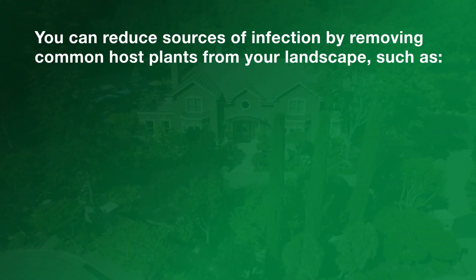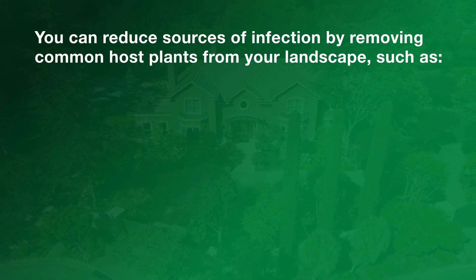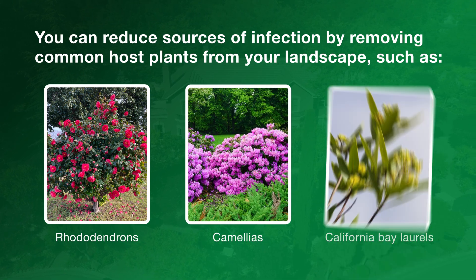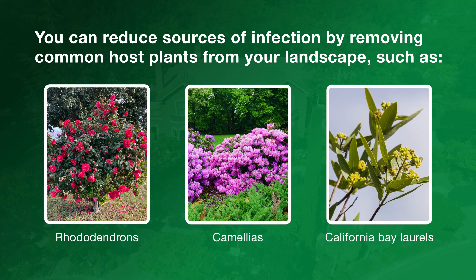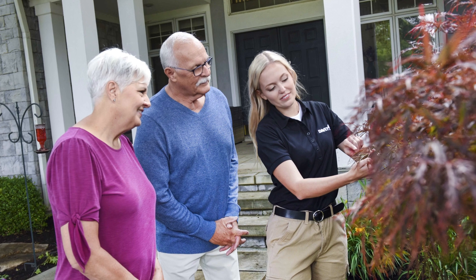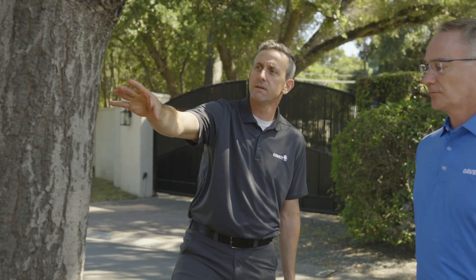You can reduce sources of infection by removing common host plants from your landscape, such as rhododendrons, camellias, and California bay laurels. Consider planting trees and shrubs that are not susceptible to this disease. Consult a certified arborist to see what plants work best in your space. Sudden oak death is tough to control, so it's important to embrace these strategies if you have oaks.